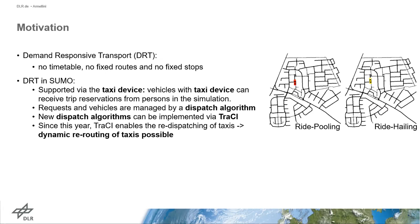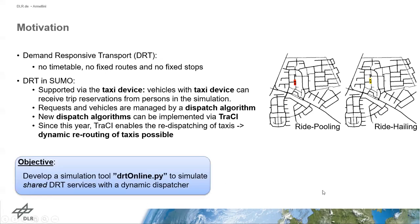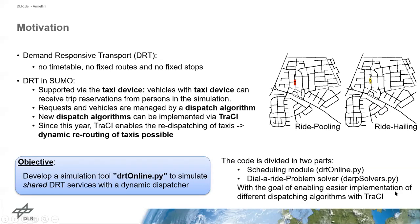The goal of this work was to develop a simulation tool called DRT Online, to simulate shared DRT services with a dynamic dispatcher. I decided to divide the code in two parts, with the goal of enabling an easier implementation of further dispatching algorithms with TRACY for other users.